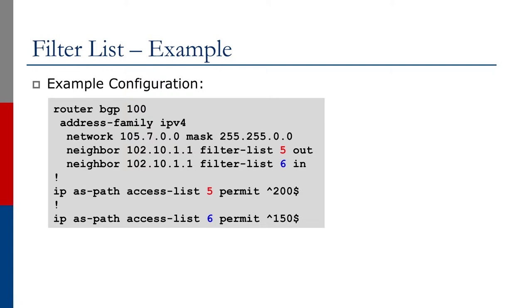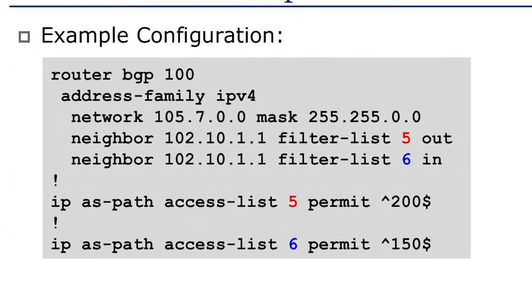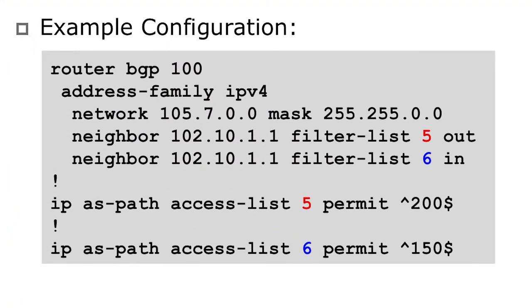This is an example of a configuration that does it. You have neighbor 102.10.1.1 with filter list 5 applied in the outbound direction and filter list 6 applied in the inbound direction. As you can see at the bottom, you have IP AS path access list 5 permit and then a regular expression, and then IP AS path access list 6 permit and then a different regular expression. We shall look at the way you construct these regular expressions next.